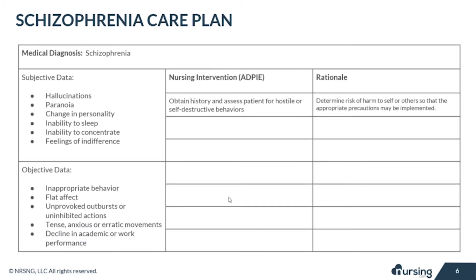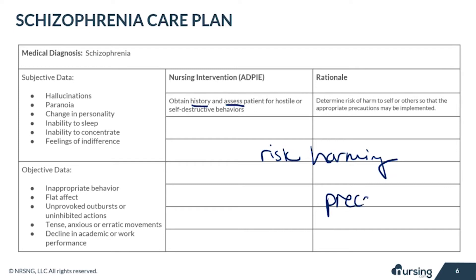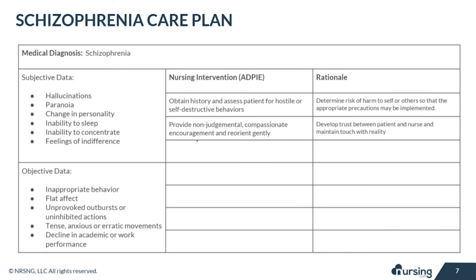For nursing interventions, you will obtain a history and assess the patient for hostile or self-destructive behaviors. Doing so helps determine if the patient is at risk for harming themselves or others, so that the most appropriate precautions can be taken according to your organization's protocol.